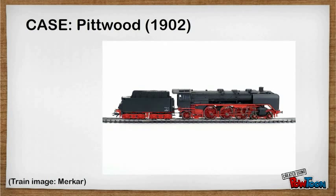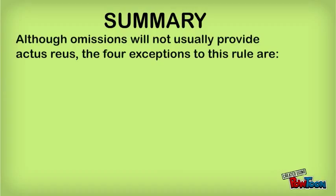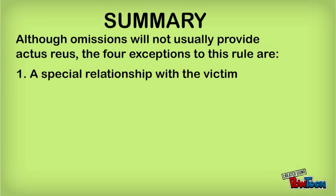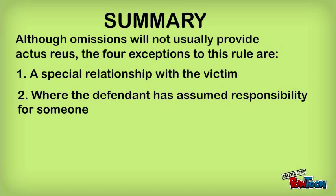So, to sum up, although omissions will not usually provide actus reus, the four exceptions to this are: one, a special relationship with the victim; two, where the defendant has assumed responsibility for someone; three, where the defendant has created a dangerous situation; four, where there is a relevant contractual obligation.